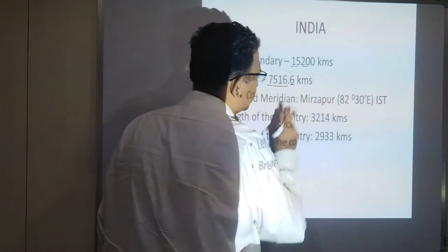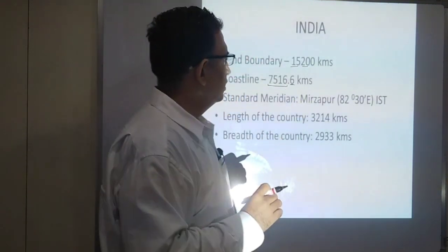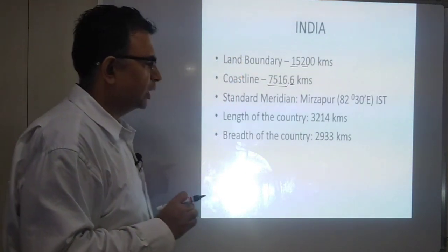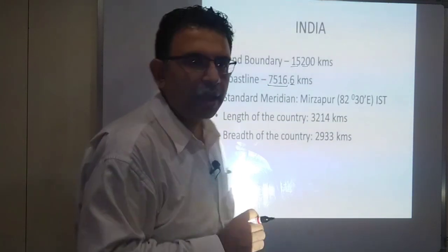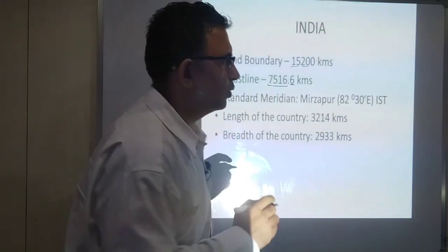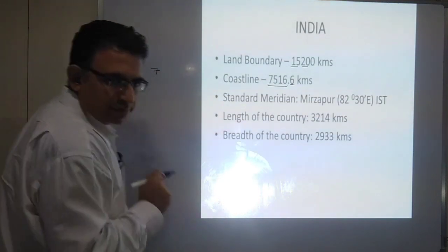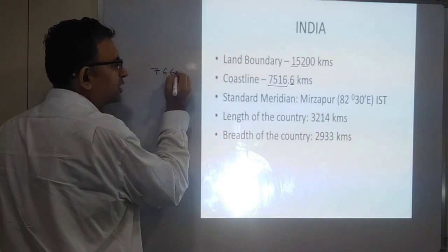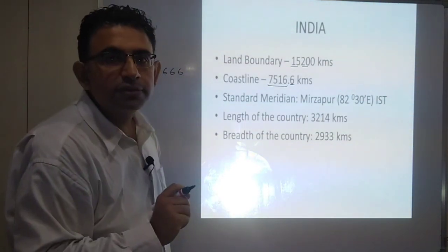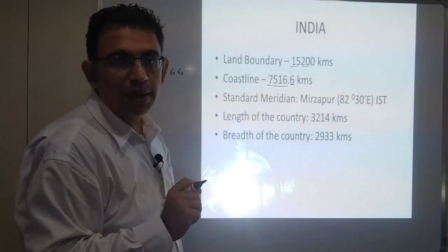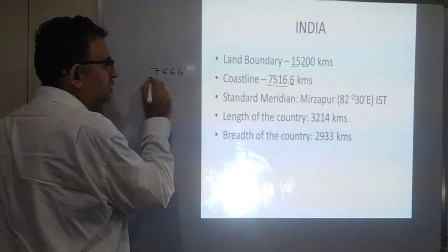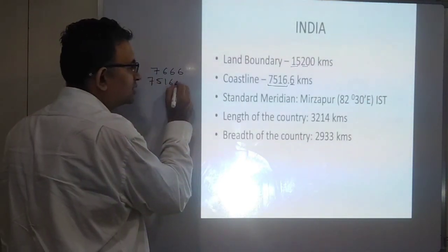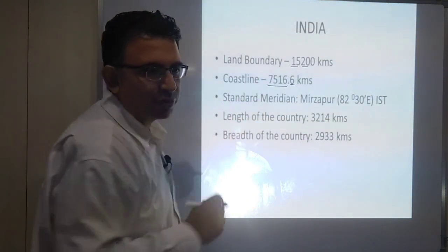For 7516.6 kilometers — if I have to split this, I write seven first. Then if you see it, six can also be written as five and one. So I write seven, then five, one, six, and six with a decimal — and I get 7516.6 kilometers.